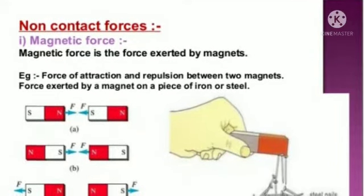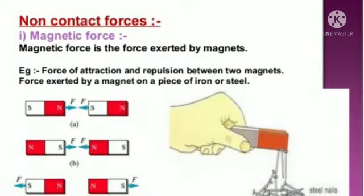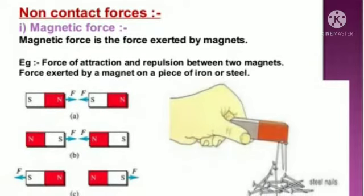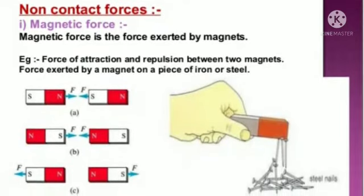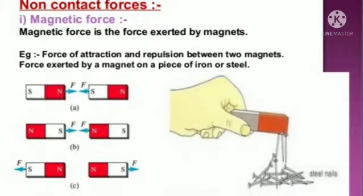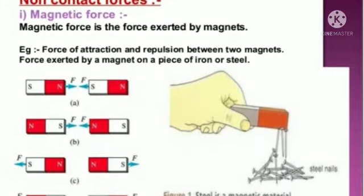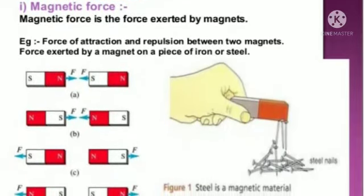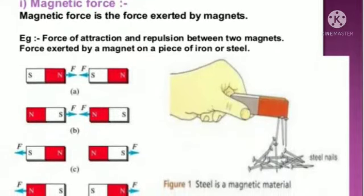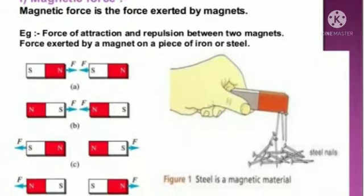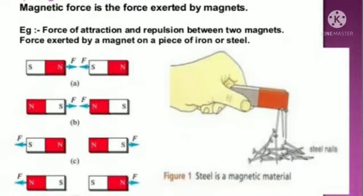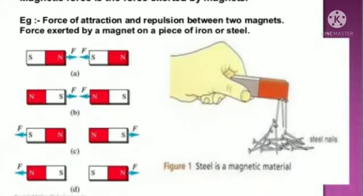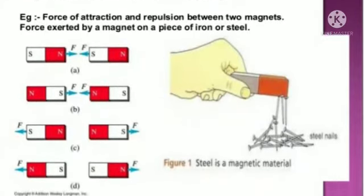Now, non-contact forces. First: magnetic force. Magnetic force is the force exerted by magnets. For example, the force of attraction and repulsion between two magnets, and the force exerted by a magnet on a piece of iron or steel — these are all called magnetic force, as shown in the diagram.